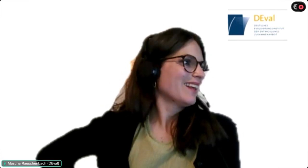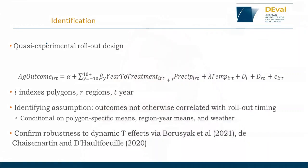We used several data sources — probably the most essential and hardest to obtain were the geocoded polygon data of the project sites. We also used climate variables to account for climatic differences between project sites and across time. Additionally, we used Landsat data, survey data, conflict event data, and high-resolution imagery.